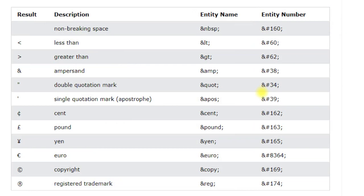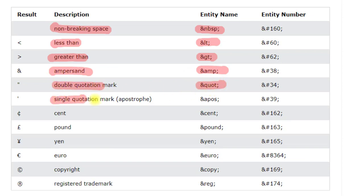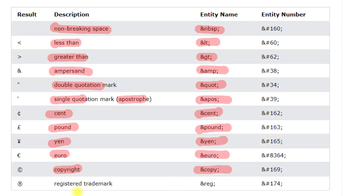Here are the most useful character entities. For non-breaking space, use ampersand nbsp. For less than, use ampersand lt; for greater than, ampersand gt; for ampersand itself, ampersand amp; for double quotation, ampersand quot; for single quotation or apostrophe, ampersand apos. For currencies: cent uses ampersand cent, pound uses ampersand pound, yen uses ampersand yen, euro uses ampersand euro, copyright uses ampersand copy, and registered trademark uses ampersand reg.